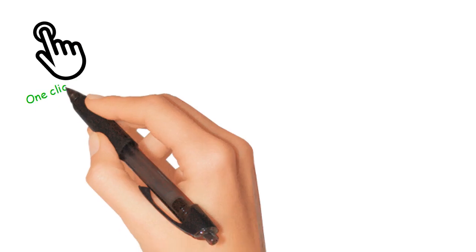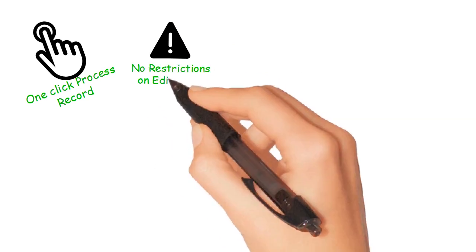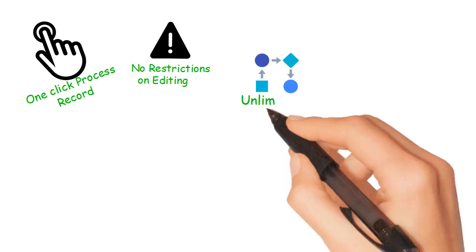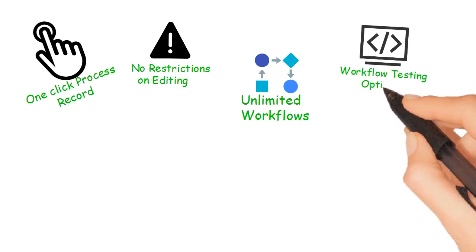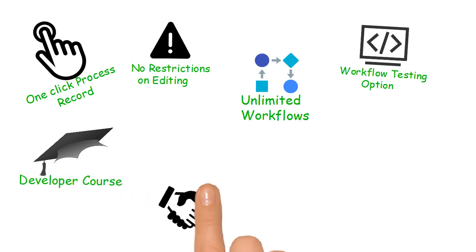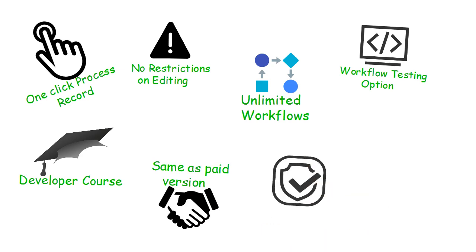Kryon System has a process record option and can be used on any application with no integration. There are no restrictions on editing and customizations, and no restrictions on the number of workflows that can be created. Workflows can be tested within Studio itself. You also get access to Kryon Academy's RPA Developer Introduction Course. The free version is exactly the same as the paid version, and this trial version comes with no time limit — free forever.